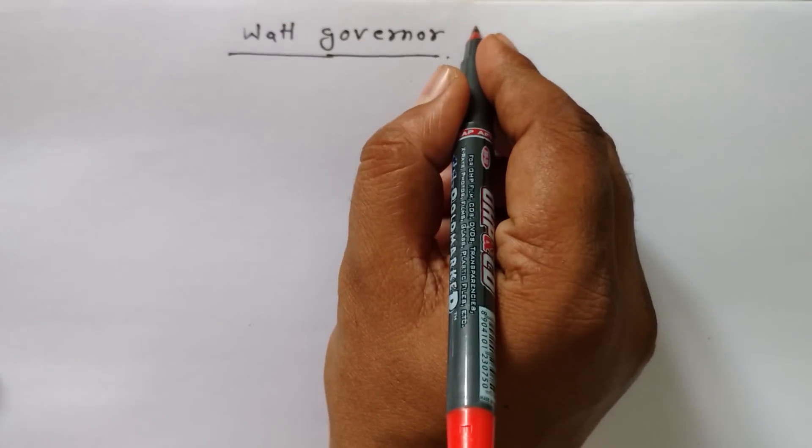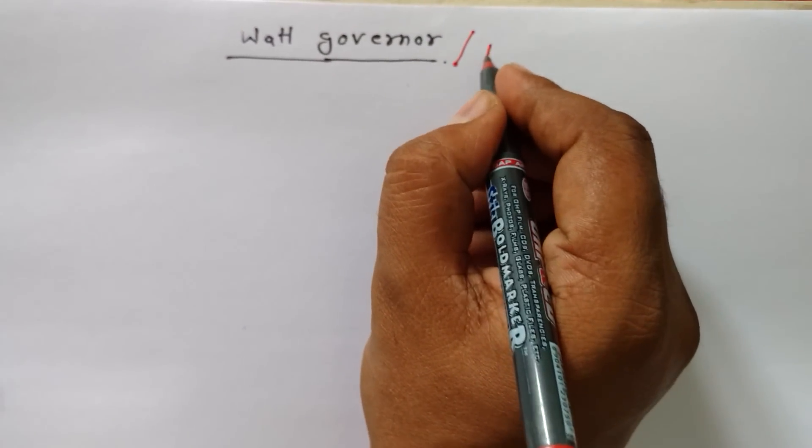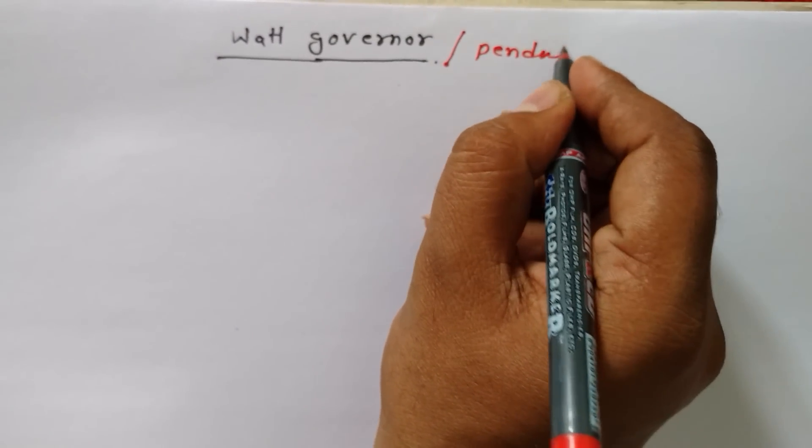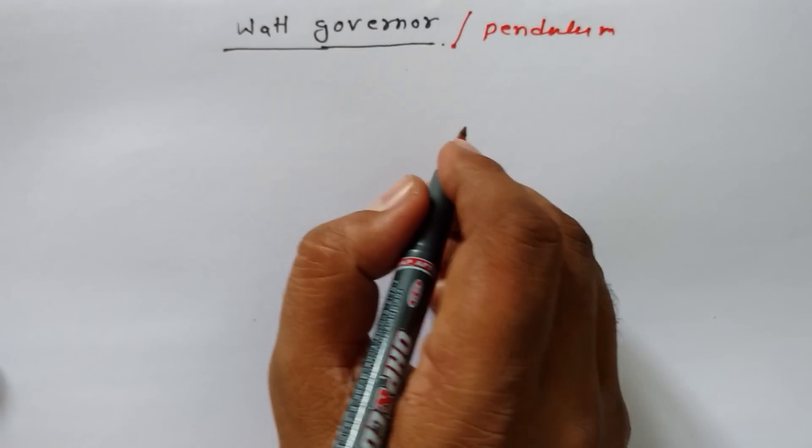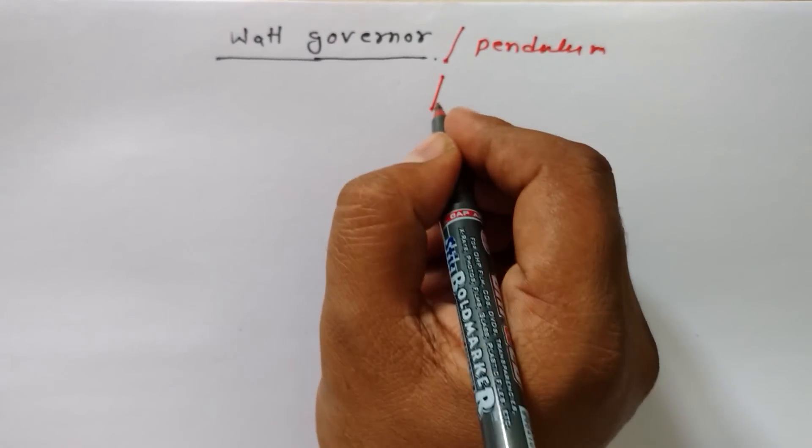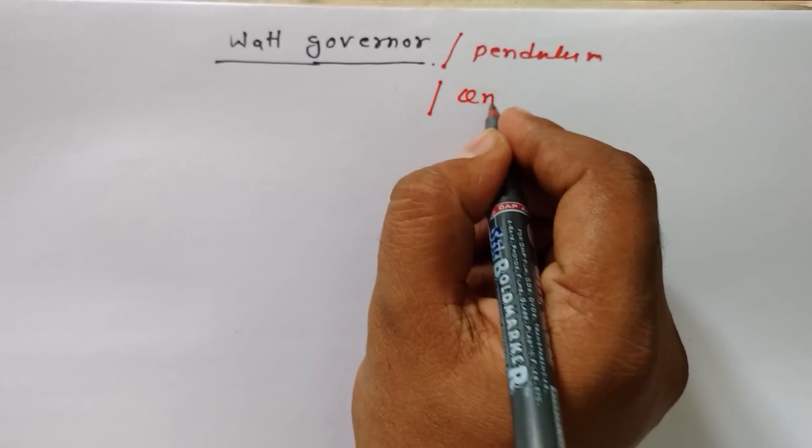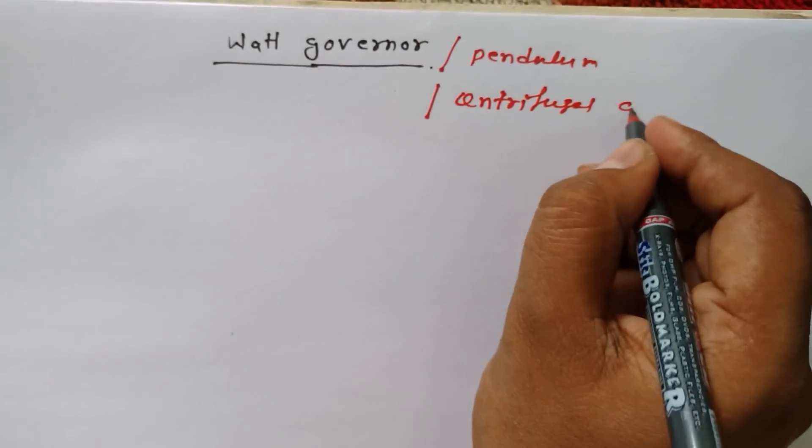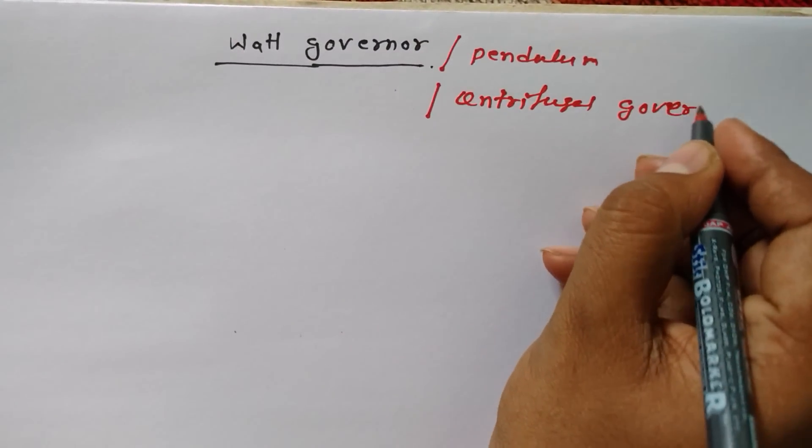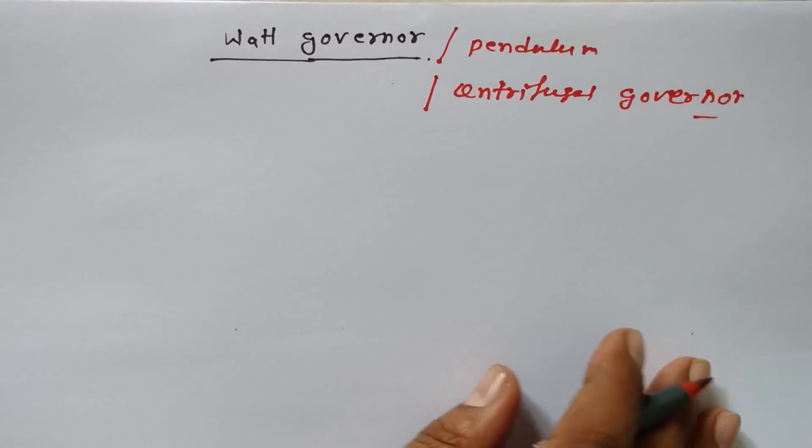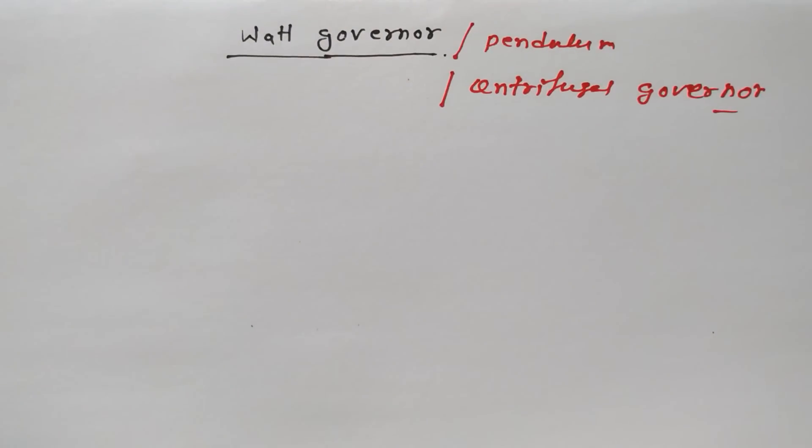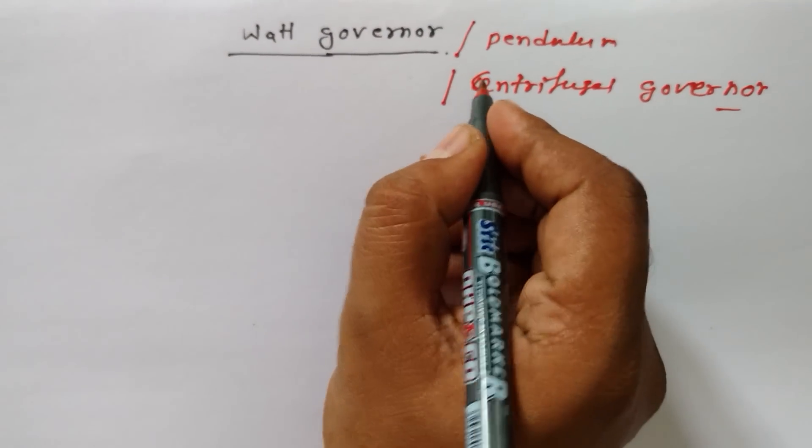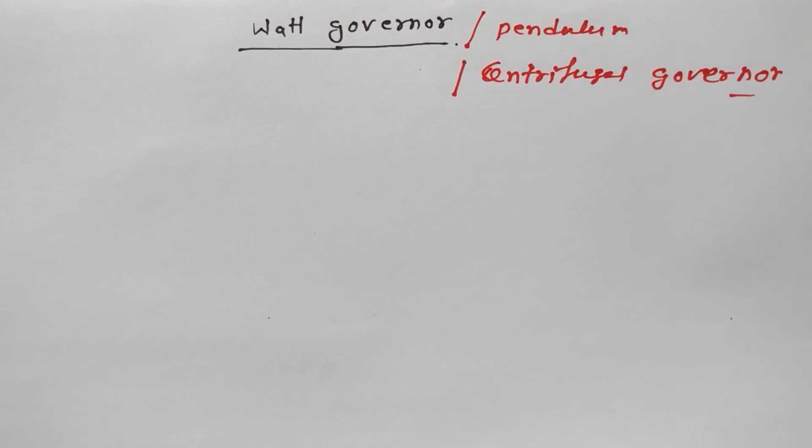Today I want to make you understand that Watt Governor is also known as pendulum type governor, and there is another name: centrifugal governor. There are many centrifugal governors, but this is one type of centrifugal governor. Remember that this is the single pendulum type governor.